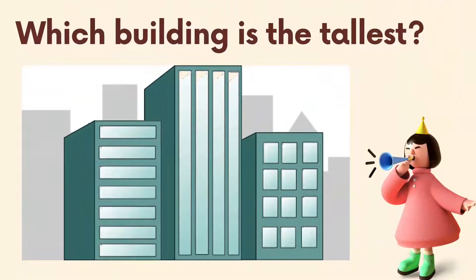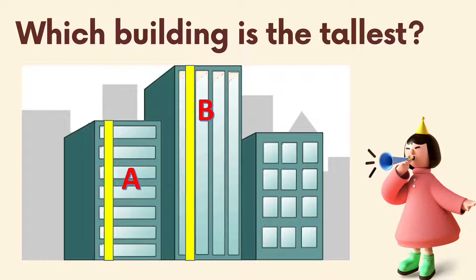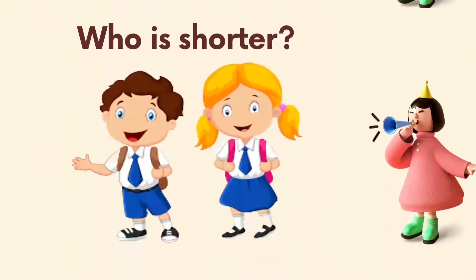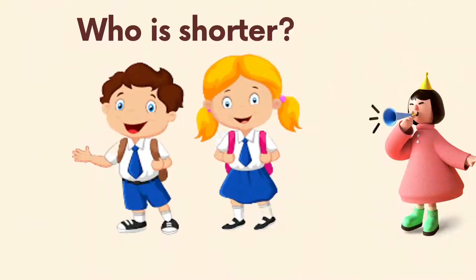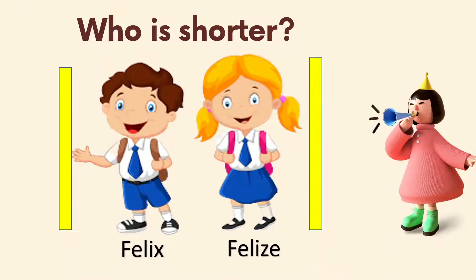Which building is the tallest? Is it building A, building B, or building C? Building B is the tallest. Who is shorter — is it Felix or Feliz? Felix is shorter than Feliz.